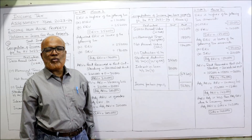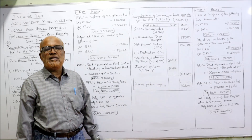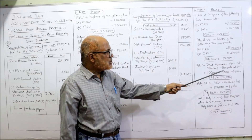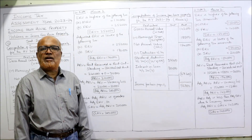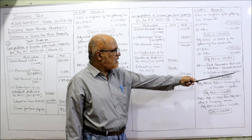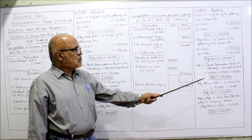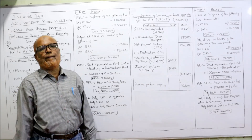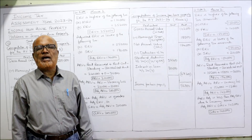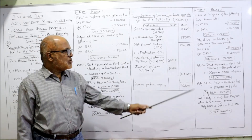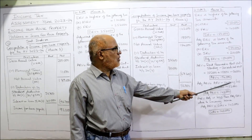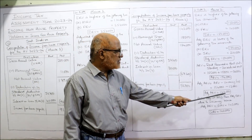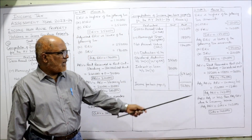ARV = Rent Received plus Outstanding Rent minus Unrealized Rent. Rent received is 1,65,000; outstanding rent is 15,000; unrealized rent is 26,000. So 1,65,000 + 15,000 − 26,000 = 1,54,000, which is the ARV. There is a vacancy loss, so adjusted ARV = ARV minus vacancy loss = 1,54,000 − 12,000 = 1,42,000.